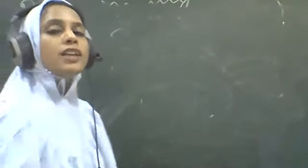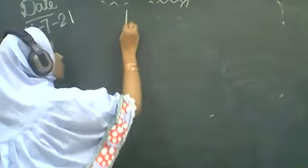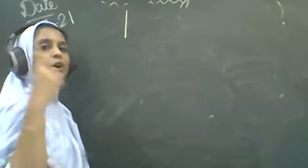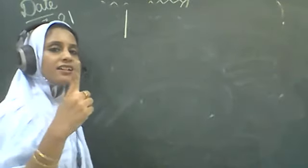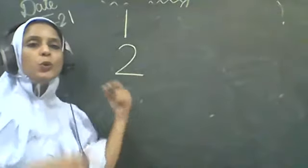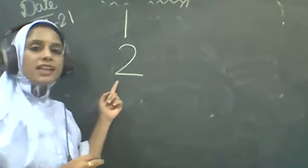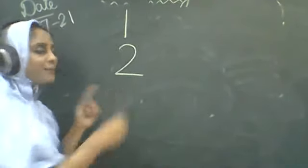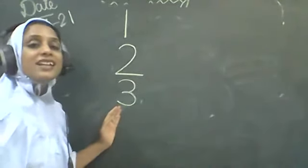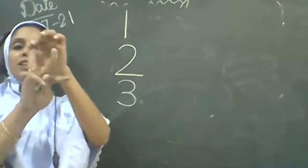We'll do another one. Which number is this? One. Then number two. One, two. Which number is this? Two. Then which number is this? This is number three. One, two, three.